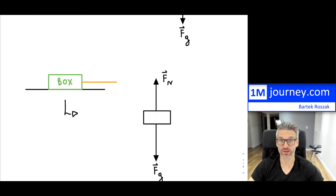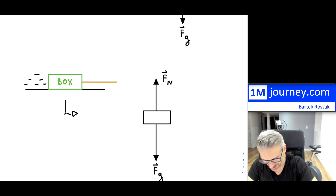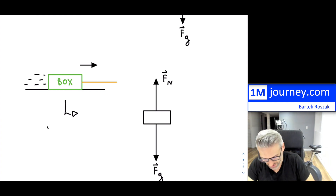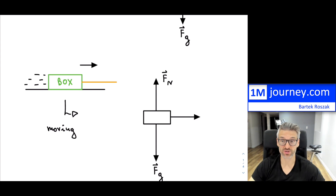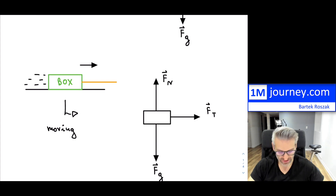If this box was just sitting there and we're not pulling it, nothing would happen. But if the box is actually starting to move — let's assume it is moving to the right — we're going to have another force. Because there is a rope attached to the box, this would be the force of tension: a pulling force that goes in that direction, trying to move it over to the right.